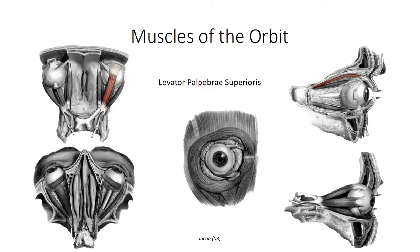Ever had the experience of nodding off when in a seated position, possibly while watching one of these videos? Then suddenly your head bobs forward and it snaps you awake with your eyes wide open. Well, the eye part is a sympathetic response through levator palpebrae superioris. Individuals who suffer damage to their sympathetic chain, a condition known as Horner syndrome, will present with permanent drooping of the eyelid, which is referred to as ptosis.